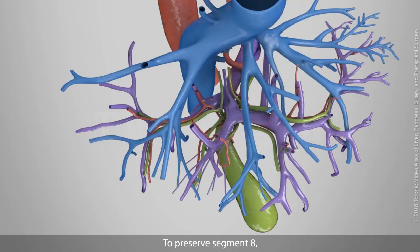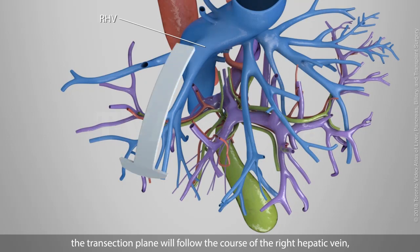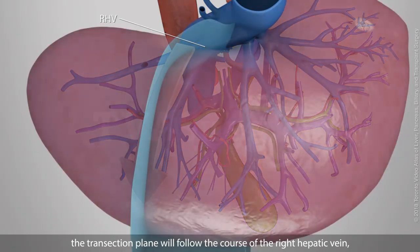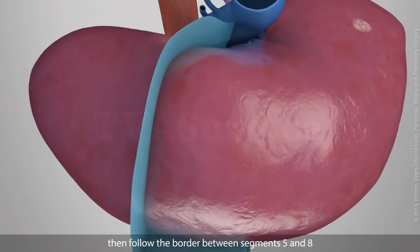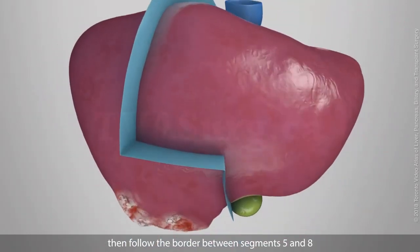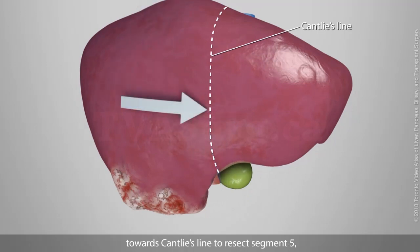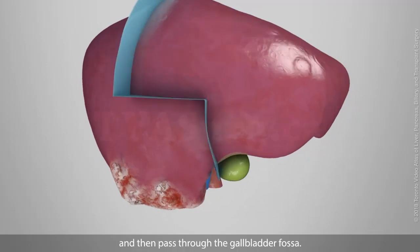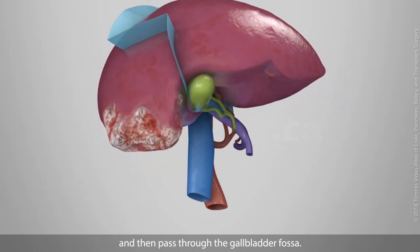To preserve segment 8, the transection plane will follow the course of the right hepatic vein, then follow the border between segments 5 and 8 towards Cantlie's line to resect segment 5, and then pass through the gallbladder fossa.